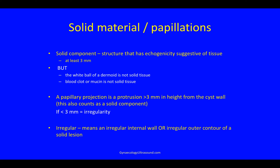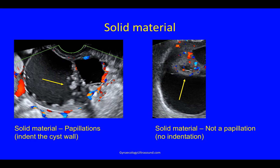An irregularity means either an irregular internal cyst wall or the irregular outer contour of a solid lesion. Here is an image showing the difference of whether or not a solid area is also a papillation. You can see that if this is more than three millimetres in height, which it is, and it indents the cyst wall, it is therefore a papillation. Whereas this bit of solid material here is solid and more than three millimetres, but it does not indent the internal cyst wall, so it does not count as a papillation.